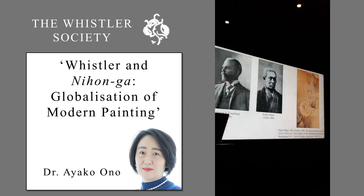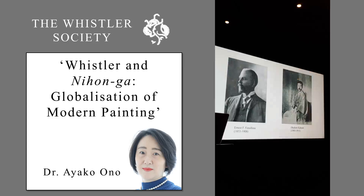Ernest Francisco Fenollosa, a government-funded foreign employee who was a central figure of the Ryuchikai, began working with Kano Hogai to create a new style of Japanese painting that blended Japanese tradition and Western style expressions. This caused discord in the Ryuchikai amid the nationalism that emerged as a reaction to the rapid Westernization of Japan after the opening of the country. The new school was especially promoted by Fenollosa and Okakura Kakuzo as part of their educational policies to create a new style of Nihonga.